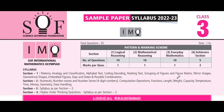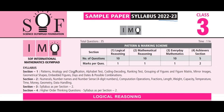The syllabus for section one covers pattern, analogy and classification, alphabet test, coding-decoding, ranking test, grouping of figures, figure matrix, mirror image, geometrical shapes, embedded figures, days and dates, and possible combinations. Section two, mathematical reasoning, covers numerals, number names and number sense up to four-digit numbers, computation operations, fractions, length, weight, capacity, temperature, time, money, geometry, and data handling.